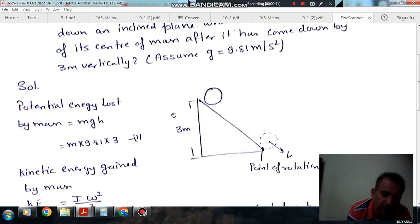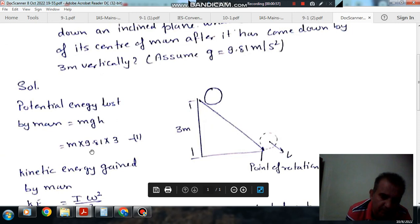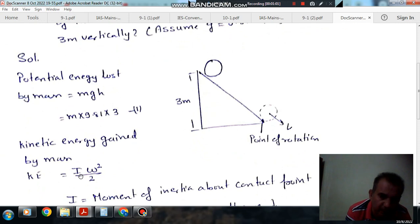The potential energy lost by the mass is mgh, where m is the mass of the cylinder, g is gravity, and h is 3 meters. The kinetic energy at this point involves I omega squared.